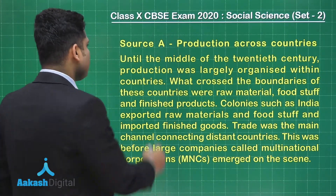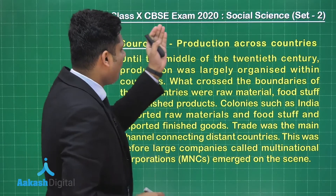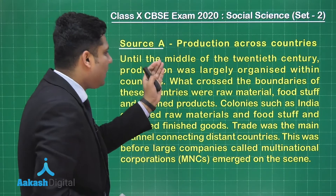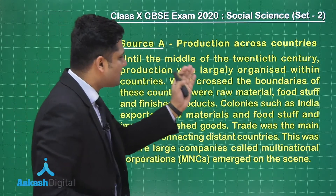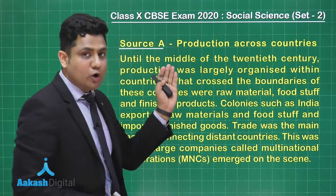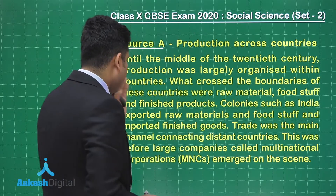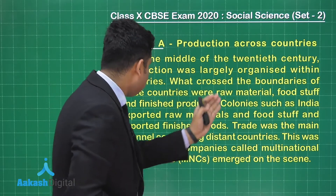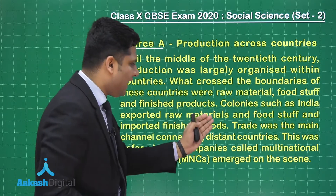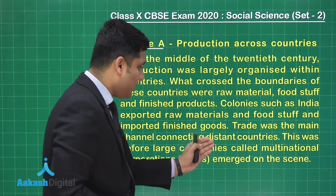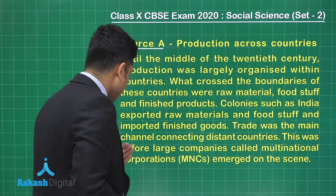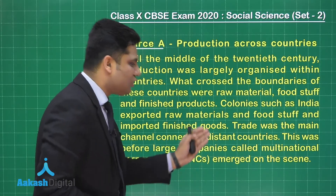First we'll be having source A. Source A is all about the production across the countries. It says until the middle of the 20th century, production was largely organized within the countries. What crossed the boundaries of these countries were raw material, foodstuff, and finished products. Colonies such as India exported raw material and foodstuff and imported finished goods. Trade was the main channel connecting distant countries. This was before large companies called multinational corporations, that is MNCs, emerged on the scene.